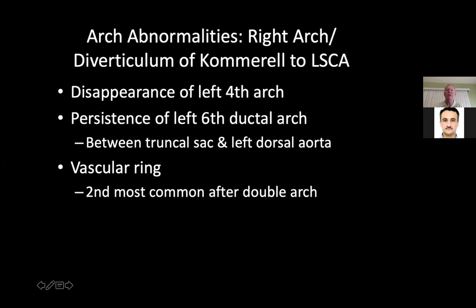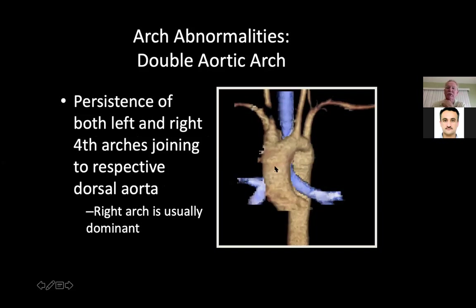If the right and left arches don't involute, you get a double aortic arch. The right arch persists — this portion did not break when it should have. Because the portion distal to the right subclavian didn't break properly, you get this double arch. Typically the right arch is dominant and the left is either small or atretic.